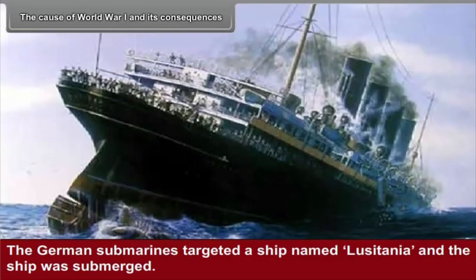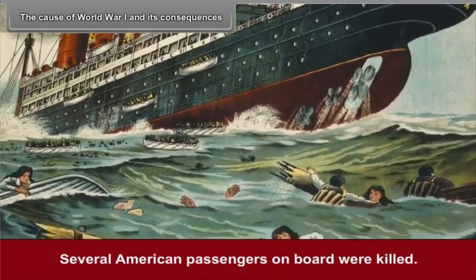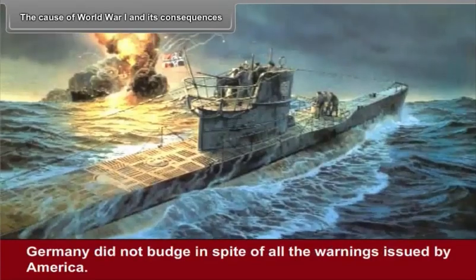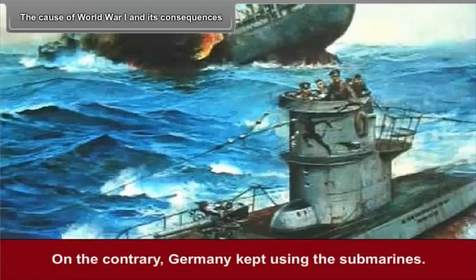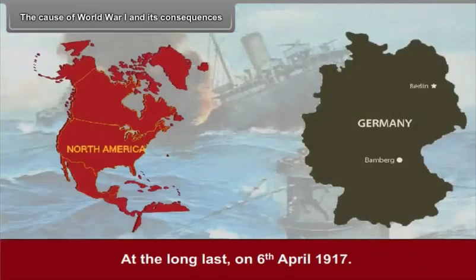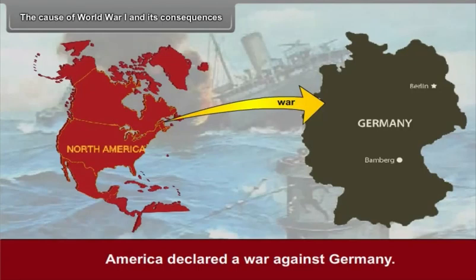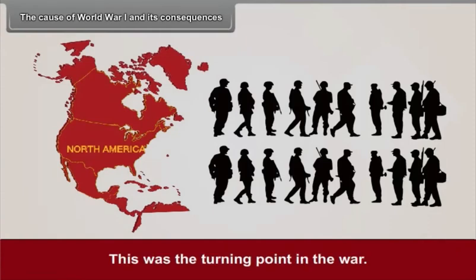German submarines targeted a ship named Lusitania and the ship was submerged. Several American passengers on board were killed. Germany did not budge in spite of all the warnings issued by America. On the contrary, Germany kept using the submarines. At long last, on 6th April 1917, America declared war against Germany. The American involvement in the war threatened the position of the Allies. This was the turning point in the war.